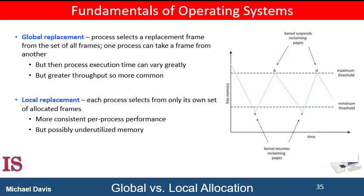With a local replacement strategy, the number of frames allocated to a process does not change. With global replacement, a process may select frames allocated to other processes, increasing the number of frames allocated to itself. One problem with global replacement algorithms is that the set of pages in memory for a process depends not only on the paging behavior of that process, but also on the paging behavior of other processes.